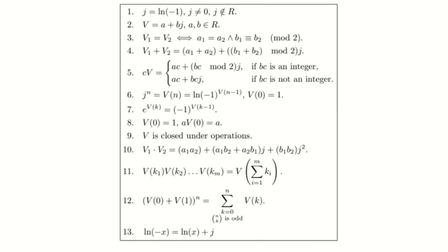The virtual number system is a fascinating and powerful mathematical framework. It extends traditional number systems with new rules and behaviors, allowing for a richer understanding of mathematics. Each axiom we've discussed today helps create a stable and consistent system that operates within well-defined boundaries. The axioms provide us with tools to handle addition, multiplication, exponentiation, and more, all within this unique system. Thank you for watching. I hope this explanation of the virtual number system has helped you understand its key concepts and operations. Don't forget to like, subscribe, and leave your questions in the comments below. We'll see you in the next video where we explore more about this incredible system.